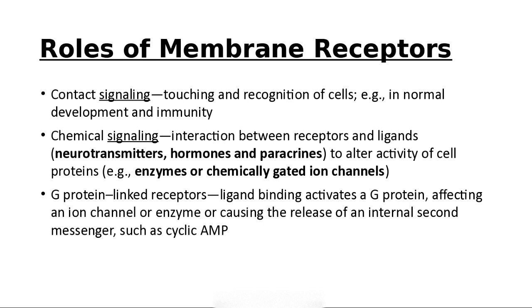Membrane receptors are for signaling. Contact signaling — a cell touching another cell — may help it know whether it belongs there or not; it's immune system related. Then chemical signaling involves things like neurotransmitters and hormones. We also have alterations of cell activity such as enzymes and chemically gated ion channels, and ligand binding activates a G protein — we'll discuss that further later.